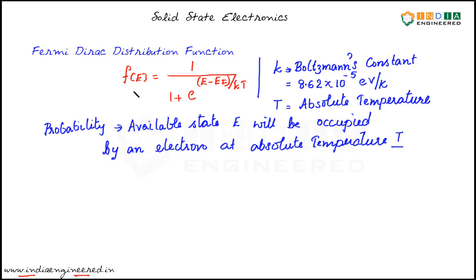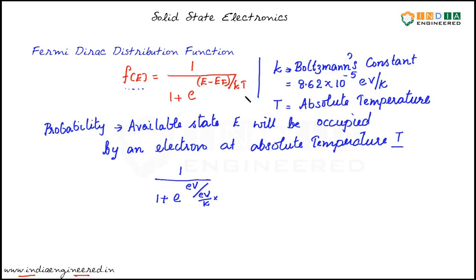Let's take a look at the units. Here we have probability, which is dimensionless, so the term on the right side should also be dimensionless. We have 1 / (1 + e^(...)). If we use electron volts for energy, we have electron volts divided by k — which has units of electron volt per Kelvin — multiplied by temperature in Kelvin. Kelvin and Kelvin cancel, electron volt and electron volt cancel, and we have a dimensionless right-hand side. This is a quick tip to verify whether you have the right equation.